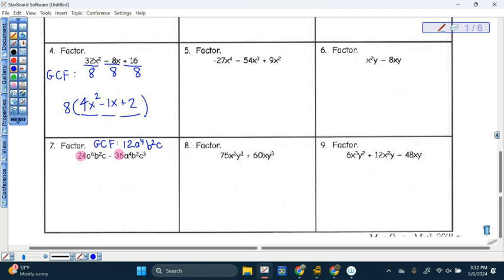This is what I have to divide by. 12 a to the fourth b squared c. The greatest common factor, the 12 a to the fourth b squared c, stays out in front. Since I'm starting with two terms, I'm going to have two terms inside my parentheses. And I'm dividing each term by this greatest common factor.